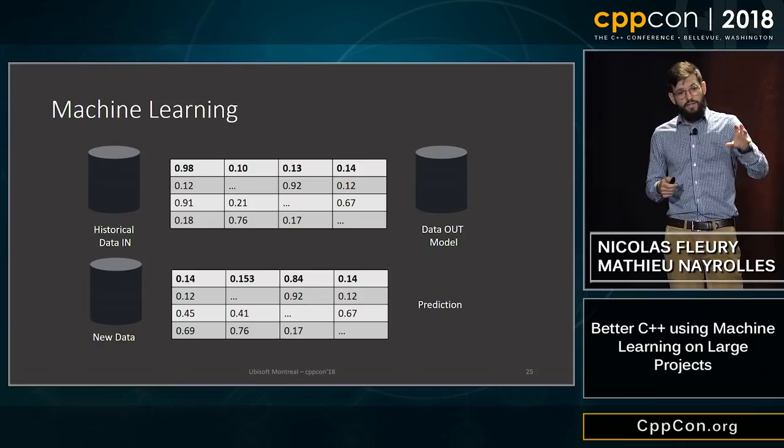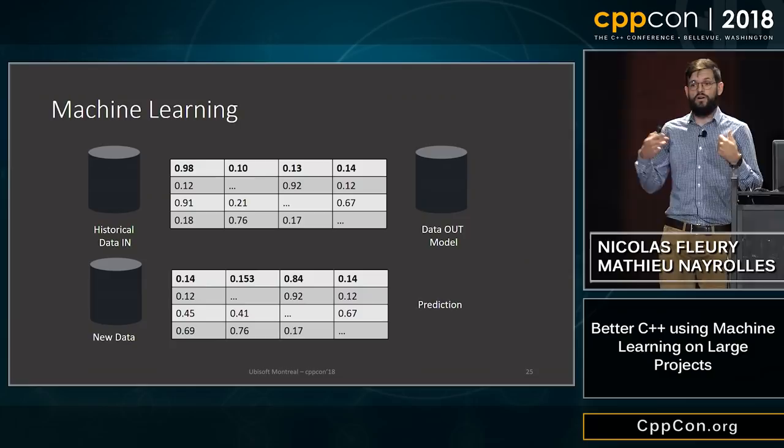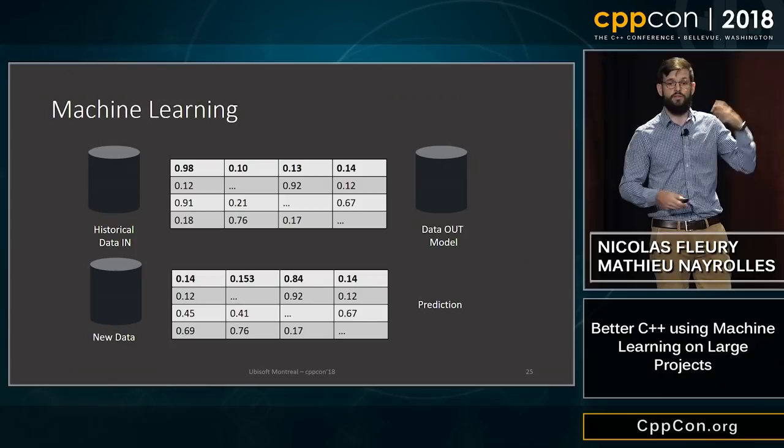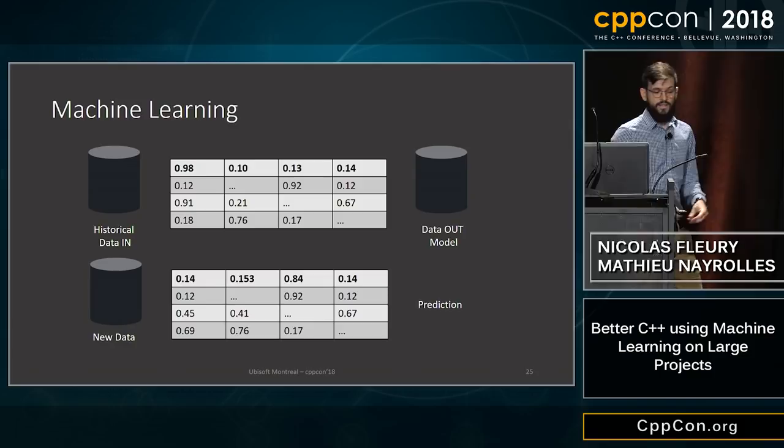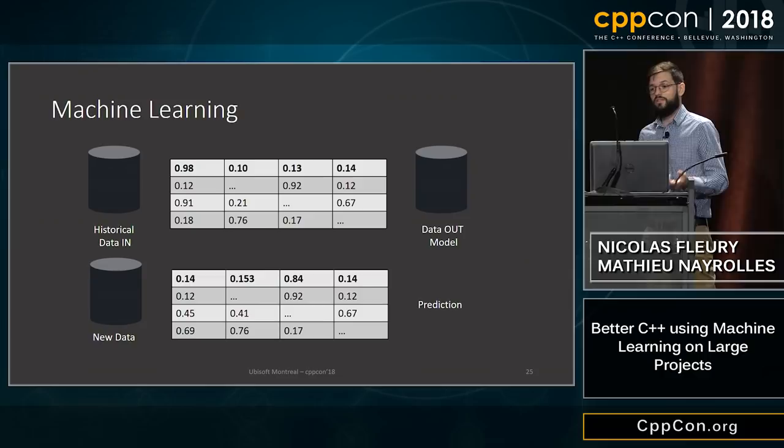In our case, the prediction is: is this commit likely to introduce a bug or not — is it a buggy commit or a sane commit? Of course it's a prediction, so we can be wrong. All the data are numerical, but a diff doesn't have much numerical data inherently, so where do we find those features? We find them, for example, in the stability of a subsystem, the churn of the subsystem, and how many lines have been added or deleted.